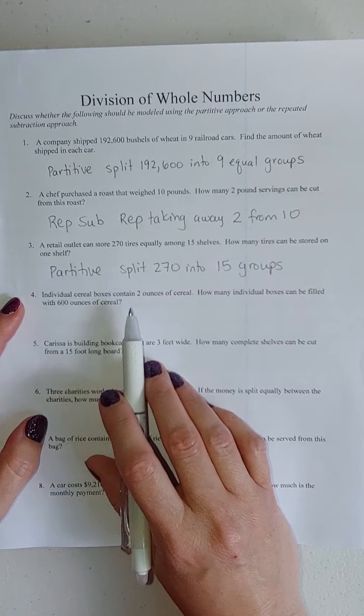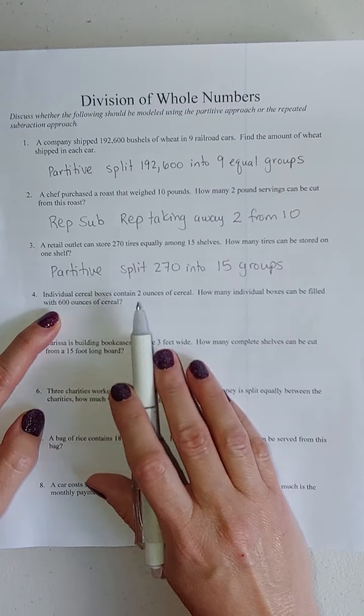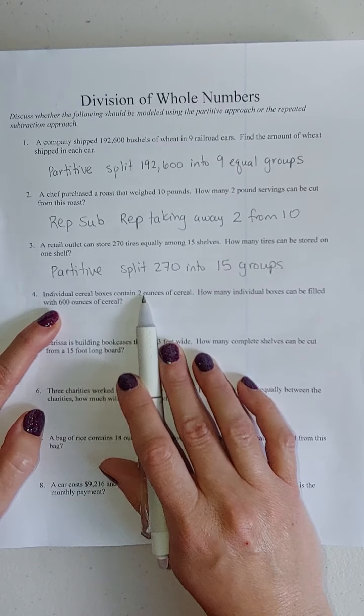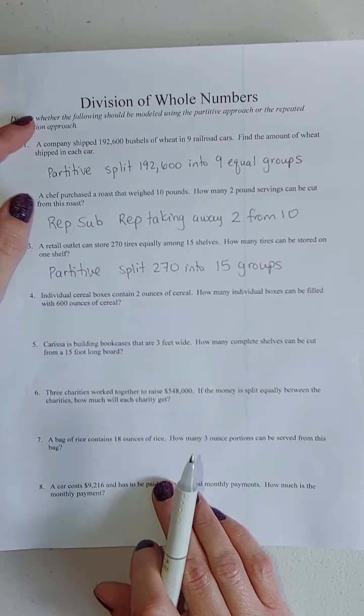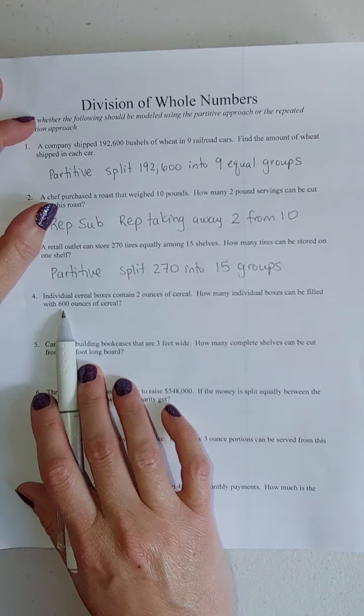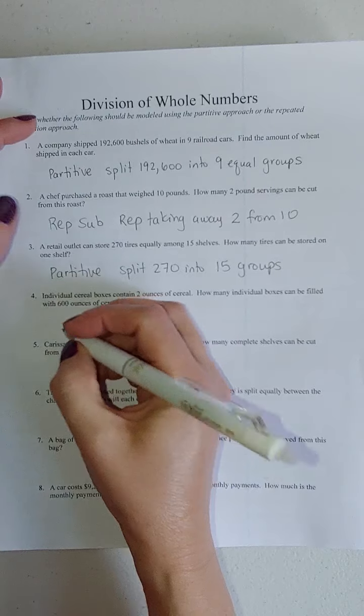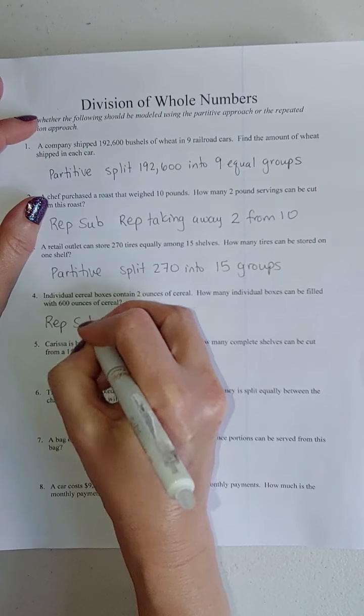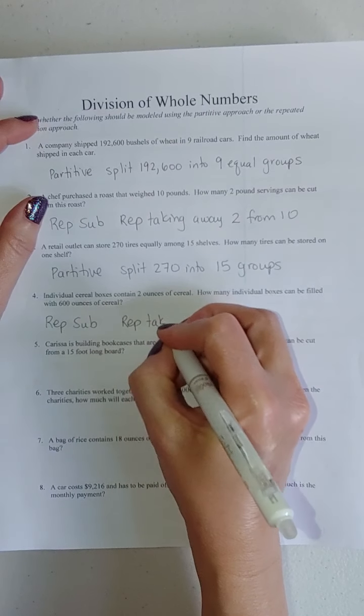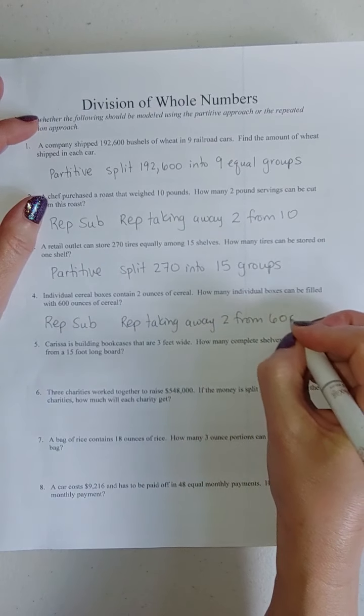With this one, I've got a total of 600 ounces. Am I splitting this into two equal groups or am I repeatedly taking away two? I'm repeatedly taking away two because I'm repeatedly filling two-ounce boxes over and over again until this is depleted. So this is going to be repeated subtraction.